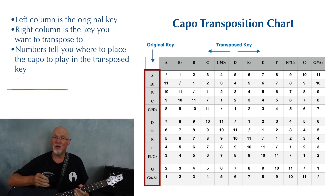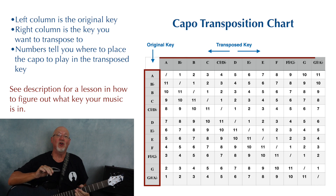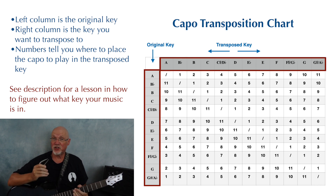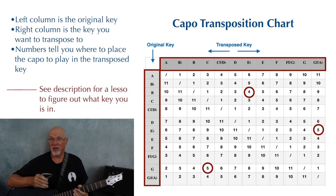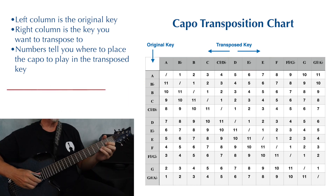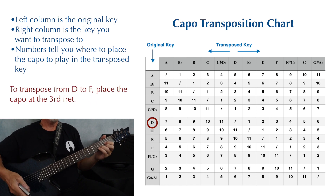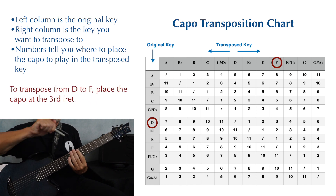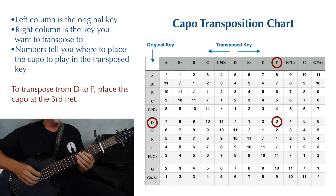The column on the left is the original key. The row at the top is the key you want to transpose to, and the numbers tell you where to place your capo in order to play in the transposed key. So, if your original key is D and you want to transpose to F, you would place the capo at the third fret.